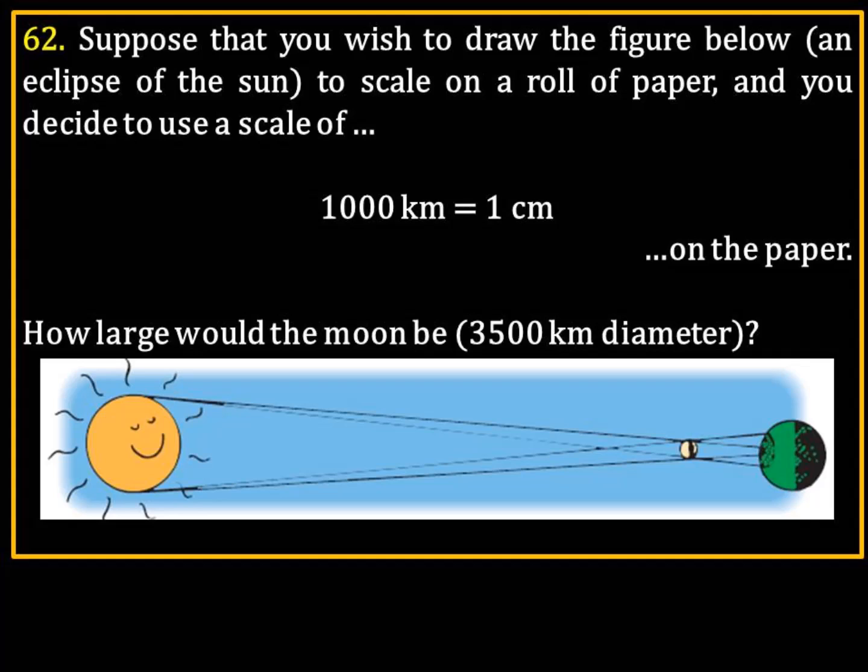Suppose that you wish to draw the figure below, an eclipse of the sun, to scale on a roll of paper, and you decide to use the scale 1,000 kilometers equals one centimeter on the paper. How large would the moon be? 3,500 kilometers in diameter.